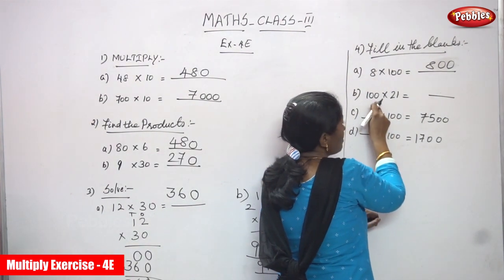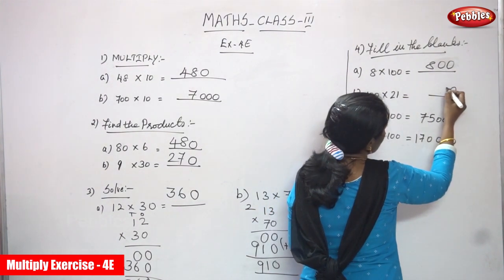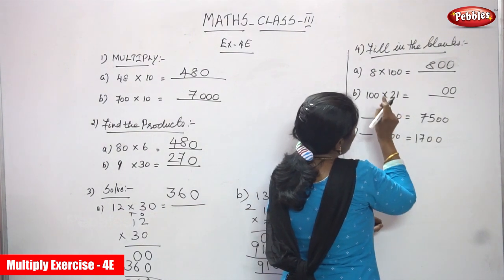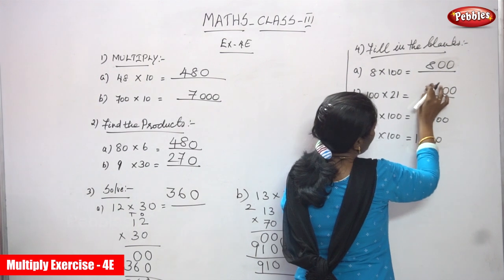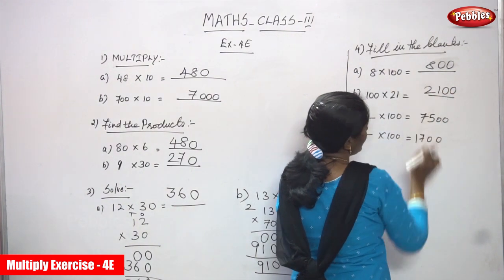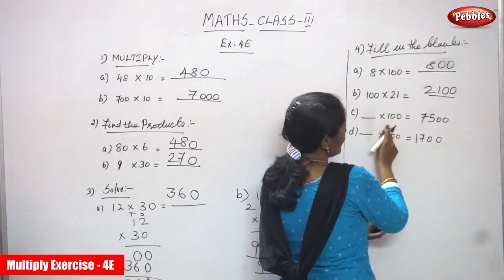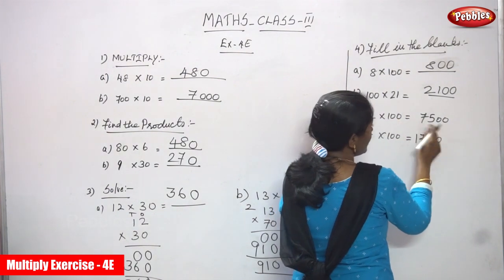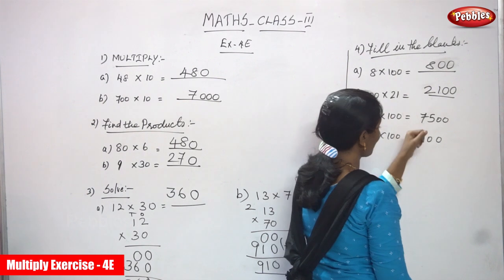Next: 100 into 21. 100 means two zeros, so write two zeros at the end. The remaining number: 1 into 21 — any number multiplied by 1 gives the same number. So write 21. The answer is 2100.